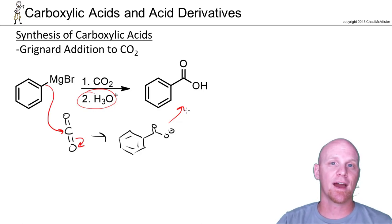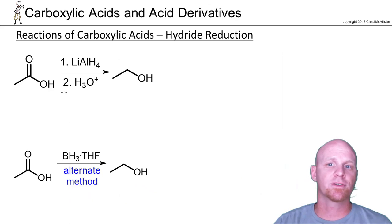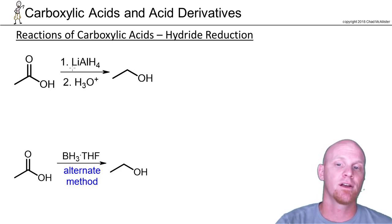Now we'll turn our attention to the reactions of carboxylic acids. Carboxylic acids are acids, so we're not going to have to worry about reacting them with organometallics. Reacting with an organometallic, they would just do an acid-base reaction—you just deprotonate the carboxylic acid and it's not the most synthetically useful thing in the world. But we can talk about hydride reductions.